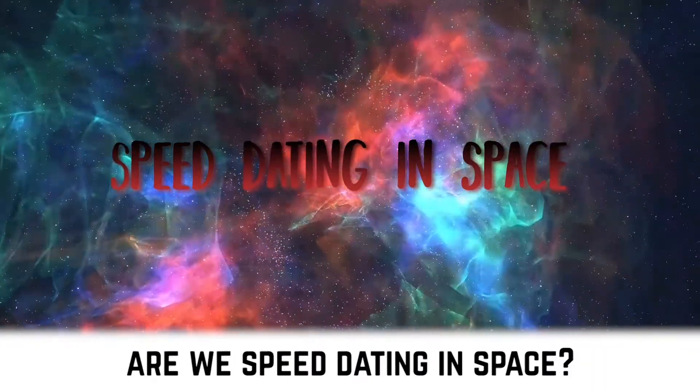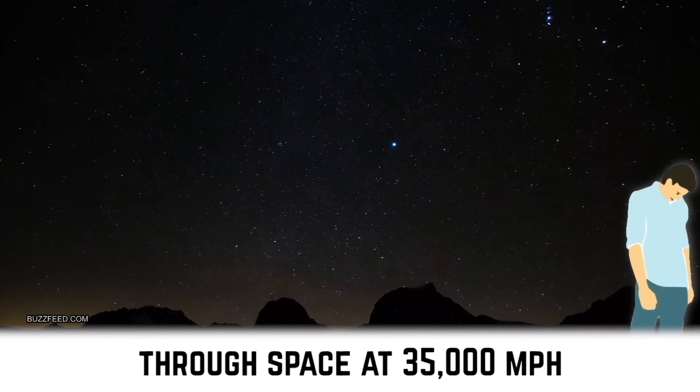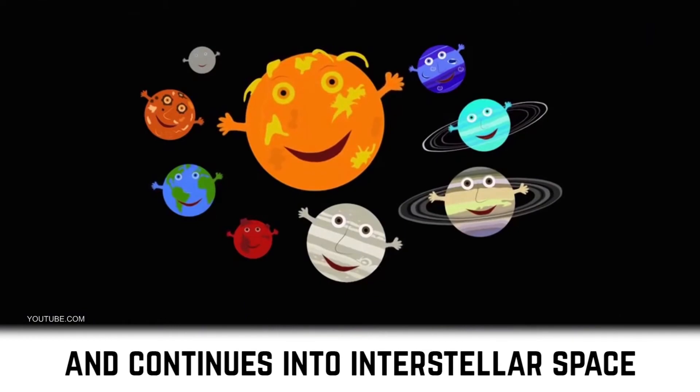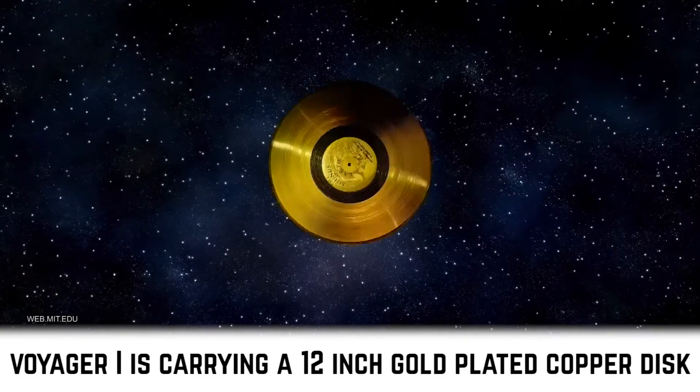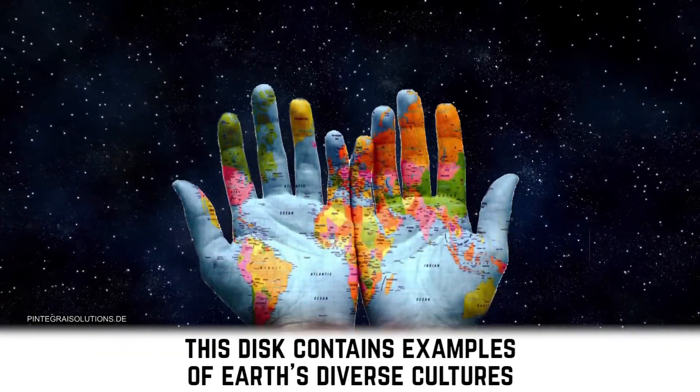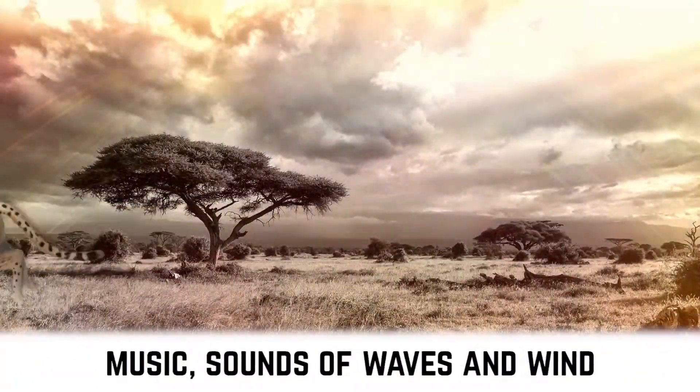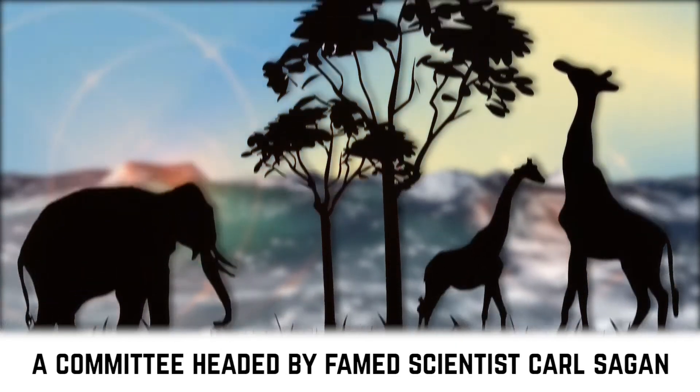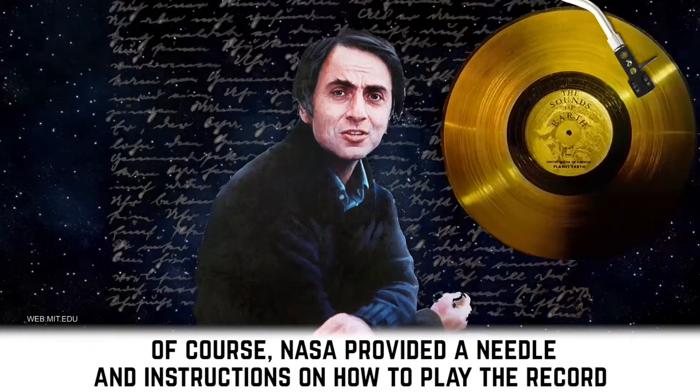Are we speed dating in space? The Voyager 1 spacecraft was launched in 1977, and ever since then has been racing through space at 35,000 miles per hour. In 2012, it left our solar system and continues into interstellar space. Along with the many instruments and sensors, Voyager 1 is carrying a 12-inch gold-plated copper disc, referred to as the Golden Record. This disc contains examples of Earth's diverse cultures and life, including selections of various language, music, sounds of waves and wind, as well as depictions of humans and animals. A committee headed by famed scientist Carl Sagan decided what to include on the record. Of course, NASA provided a needle and instructions on how to play the record.